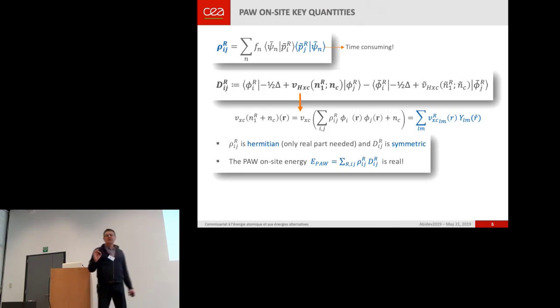And this could be the topics of the second part of my talk, but this probably will not be. So these two quantities have symmetries. RORIJ is Hermitian, but in the ground state, non-polarized, simple case, you don't use the imaginary part of RORIJ, and DIJ is symmetric.